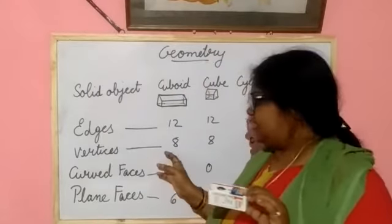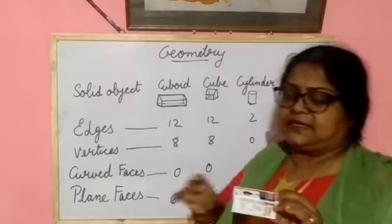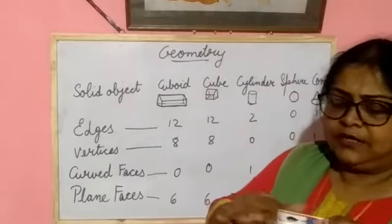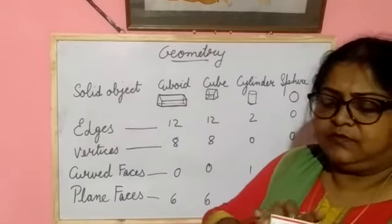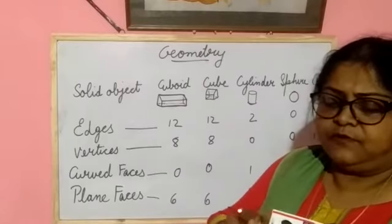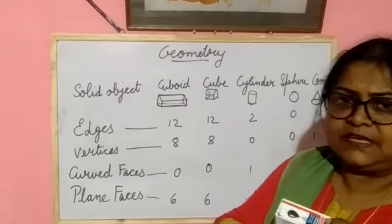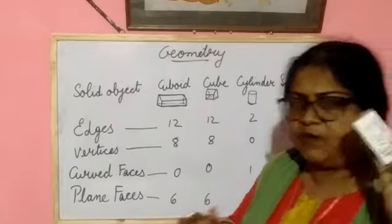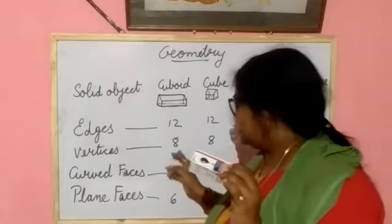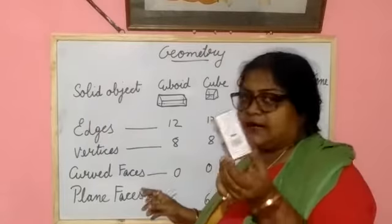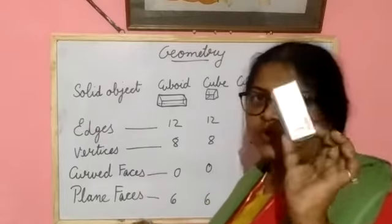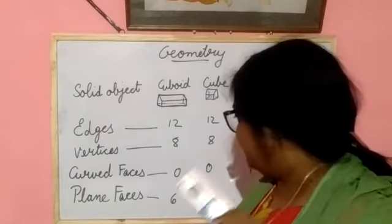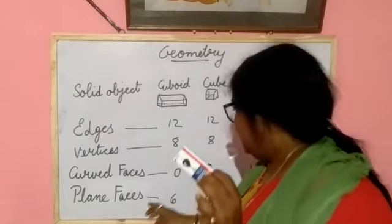The cuboid has 8 vertices: 1, 2, 3, 4, 5, 6, 7, 8. And there is no curved face in a cuboid.